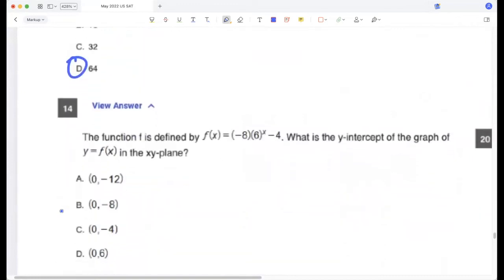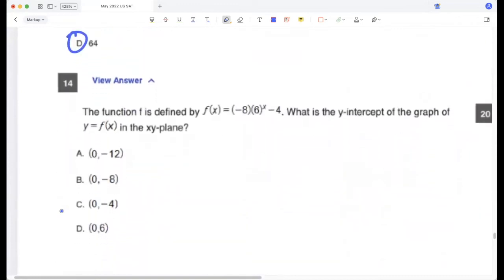The function defined by this, what is the y-intercept of the graph? So for the y-intercept, we'll put x as 0. So y-intercept will be minus 8 into 6 to the power 0 minus 4. So minus 8 minus 4, which is minus 12. So A.